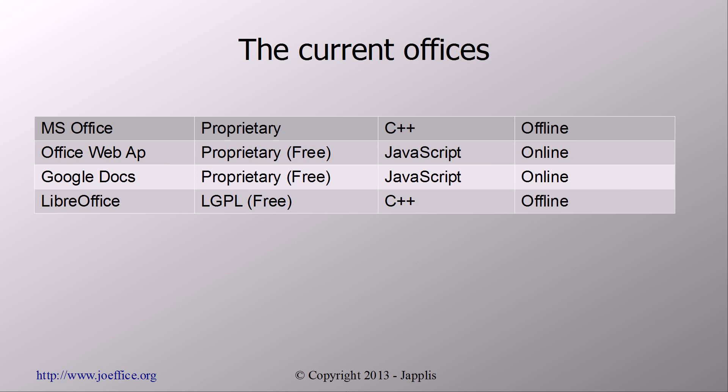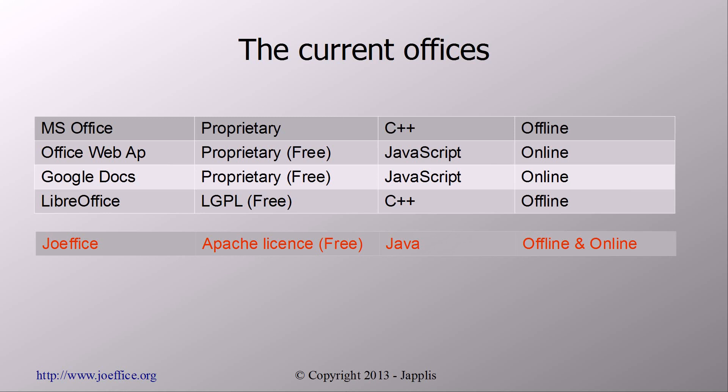Now I want to change this. I want to have something more free, something using another popular language. I want to have something written in Java. So that's what I'm going to write — Jophis. It combines everything from the above: it will be available online and offline, written in Java, which is a very popular language, and it will be released under the Apache license.